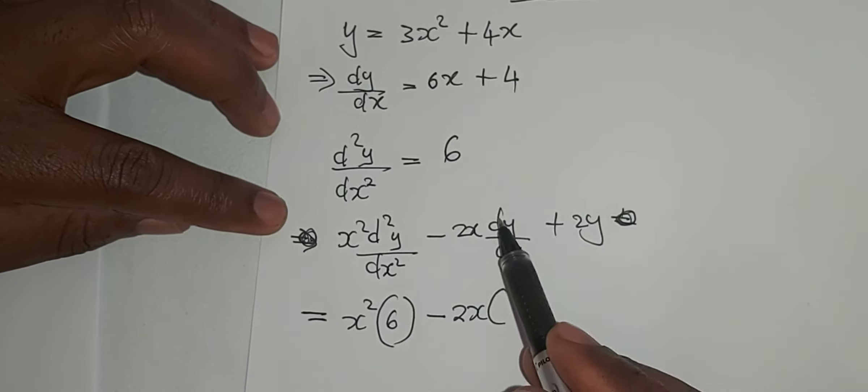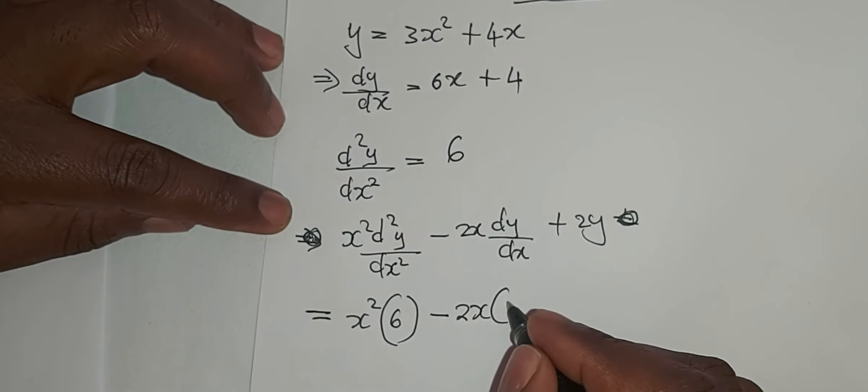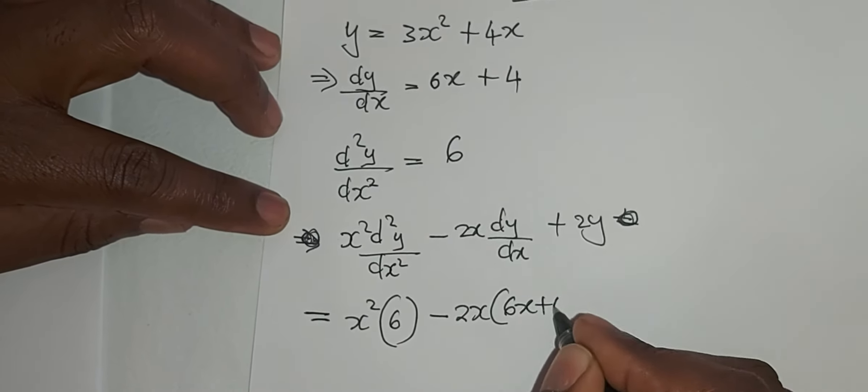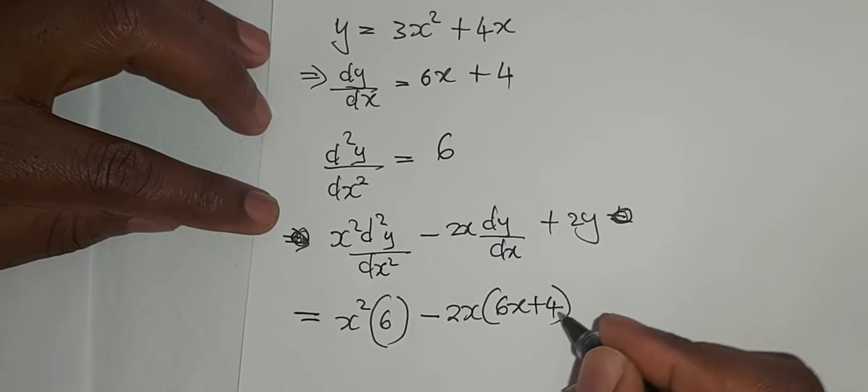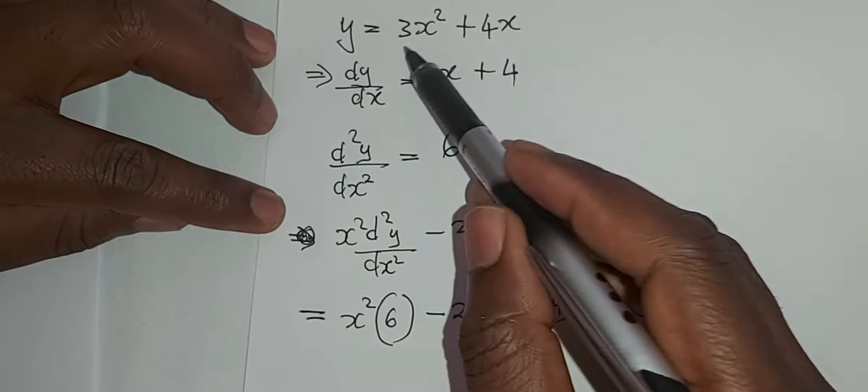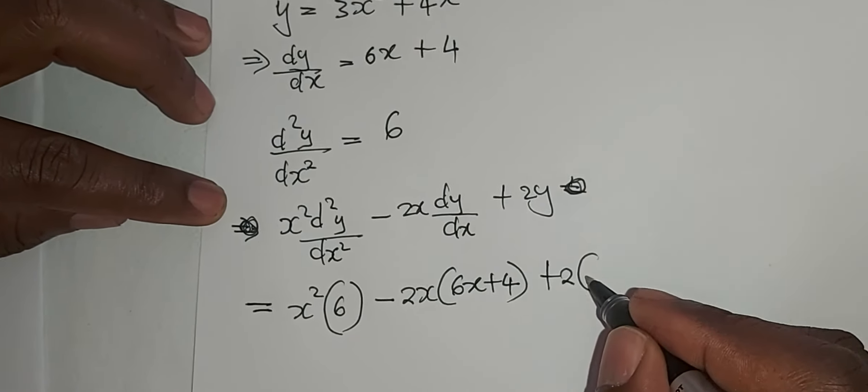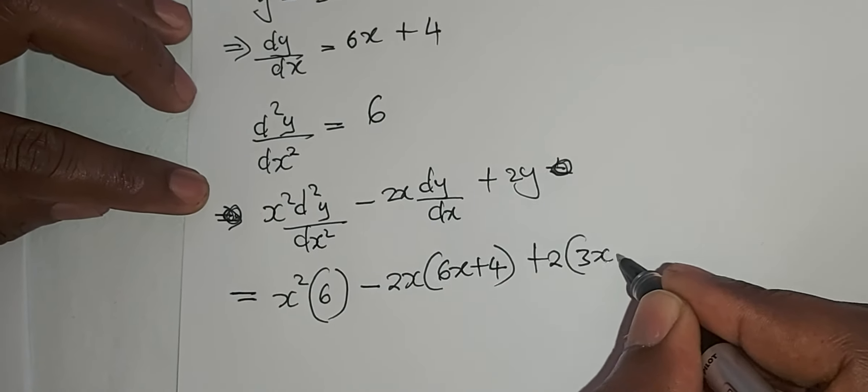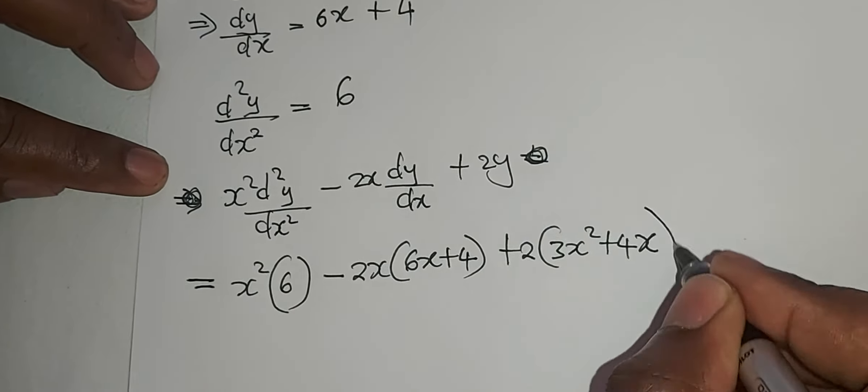This equals x squared times 6 minus 2x times 6x plus 4 plus 2y. Our y is the original thing there, which is 3x squared plus 4x.